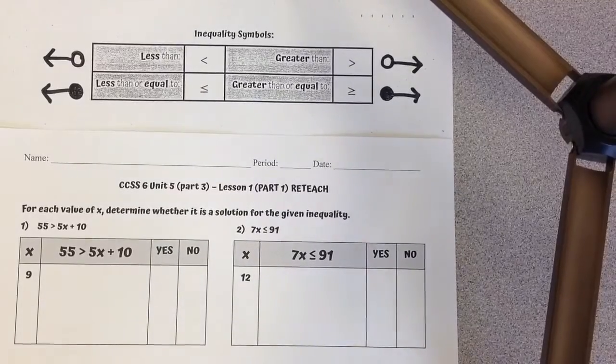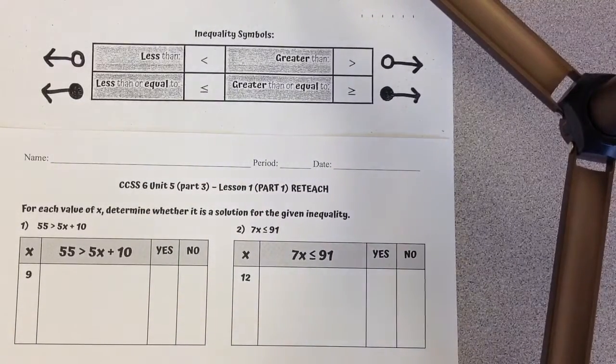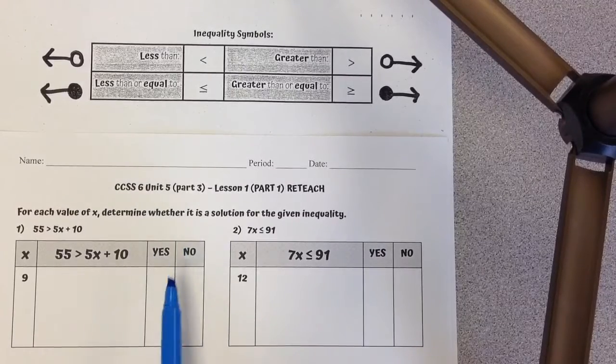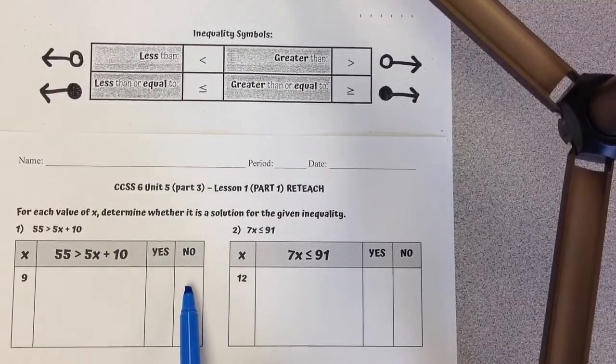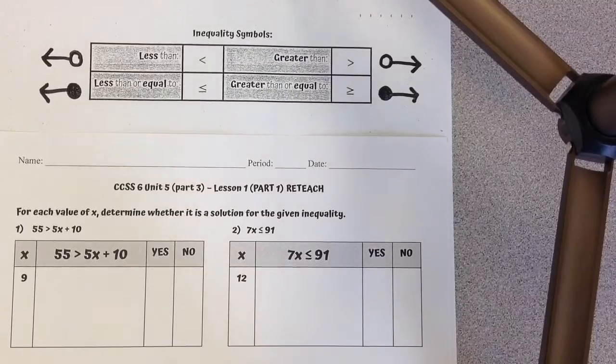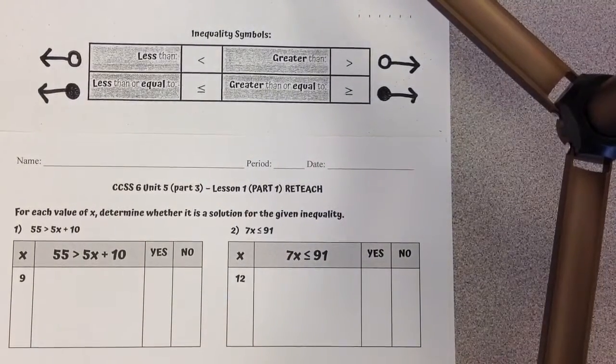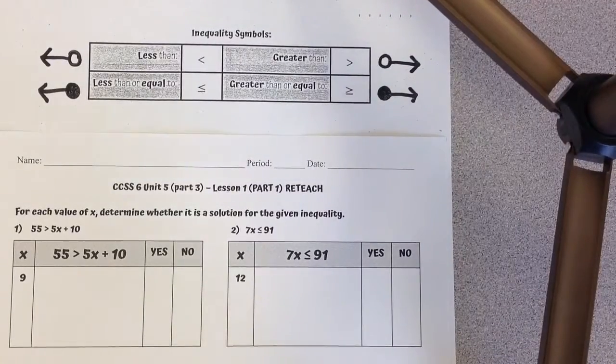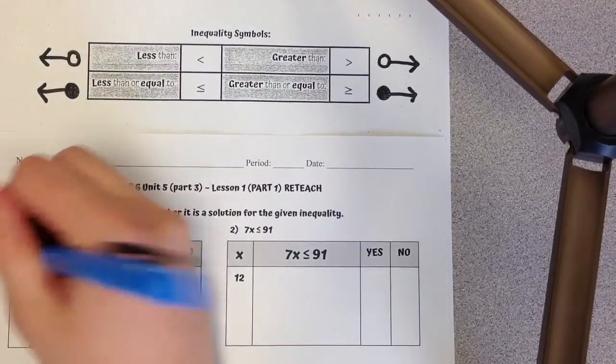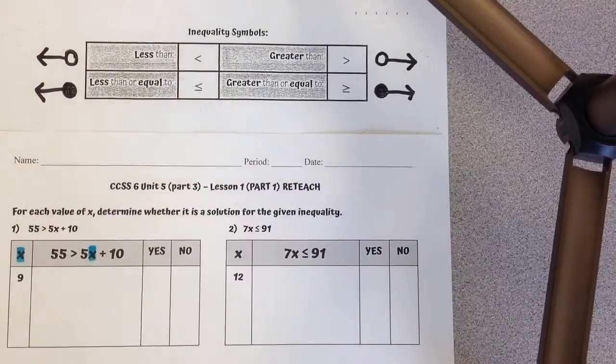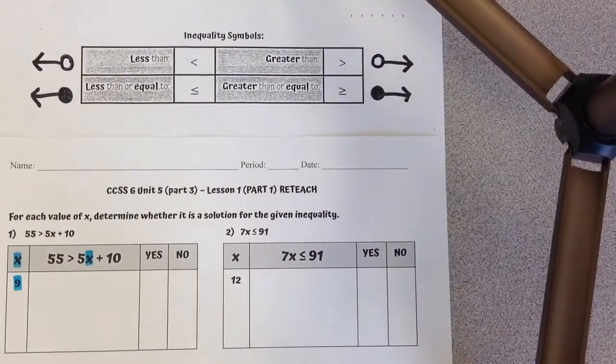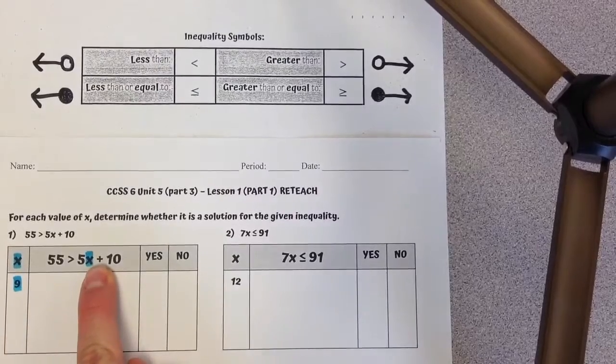So what we are doing is, for each value of x that is given, we're determining whether it is a solution for the given inequality or is not a solution for the given inequality. So what we are going to do is, we're working with our x, so I'm going to highlight my x, and I'm going to highlight my value.